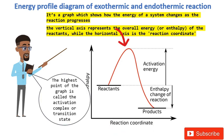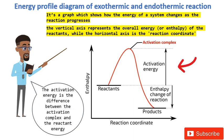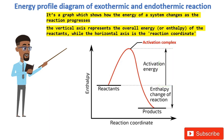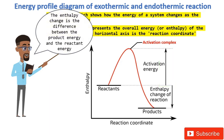The highest point of the graph is called the activation complex or transition state. It is where breaking and formation of bonds occur. The activation energy is the difference between the activation complex and the reactant energy — defined as the energy that must be overcome for a reaction to take place. The enthalpy change is the difference between the product energy and the reactant energy, also known as the heat change of a chemical reaction.